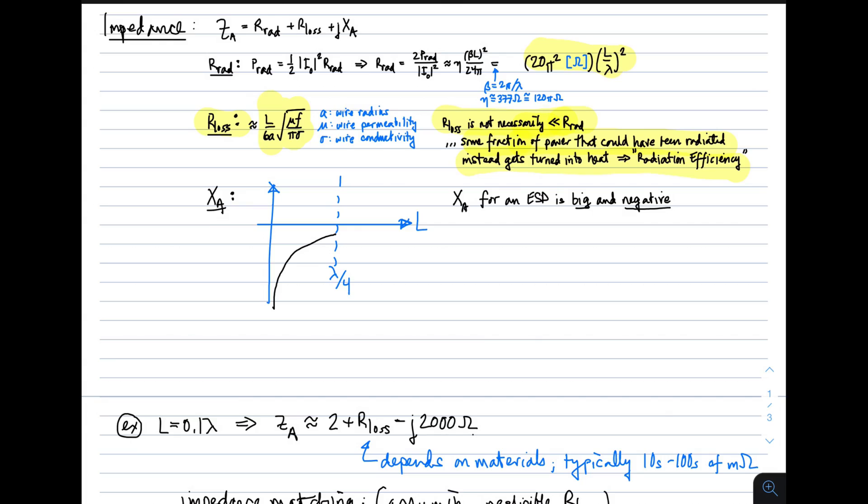If, on the other hand, the loss resistance is significant compared to the radiation resistance, then relatively little of the power accepted by the antenna ends up in the radiated wave. It's wasted in heat in the dipole. We have low radiation efficiency.